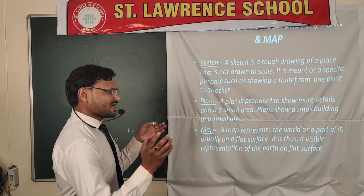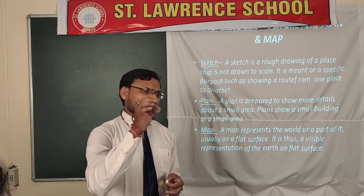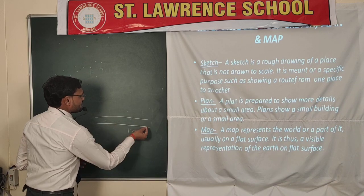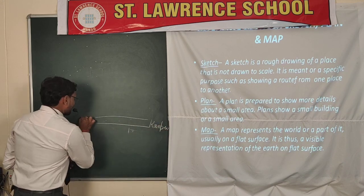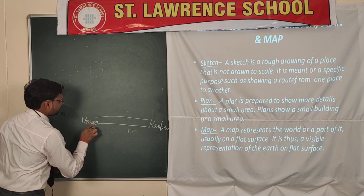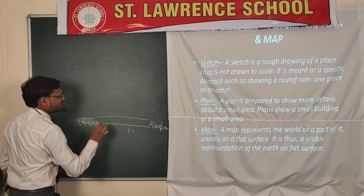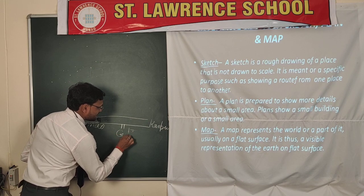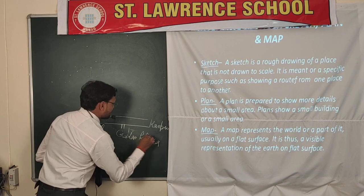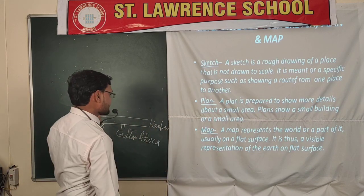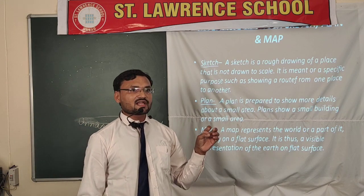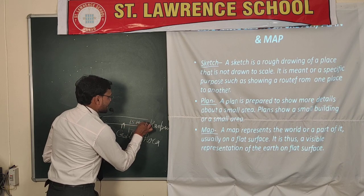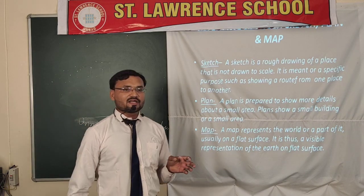For example, we have seen that sometimes on invitation cards, a rough sketch shows the destination where a wedding or function is to be held — roughly showing roads and landmarks. Such a rough sketch tells us the destination and approximate distances, like '15 kilometers from Kanpur and 2 kilometers from Onna.' That rough drawing of an area is known as a sketch.